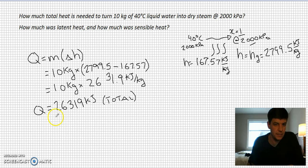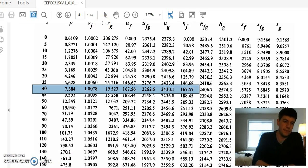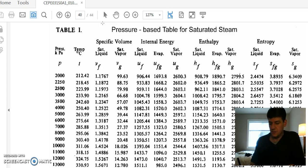The next question is, how much was latent and how much was sensible? Because the entire phase change happened, I could argue that my latent heat would be my HFG at 2000 kPa. That's the latent heat of vaporization. Since all of it changed into dry steam, I know that's how much was added during the heating process.